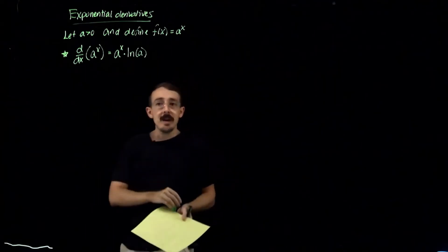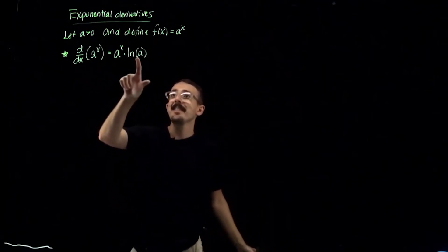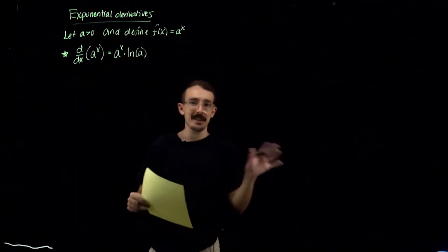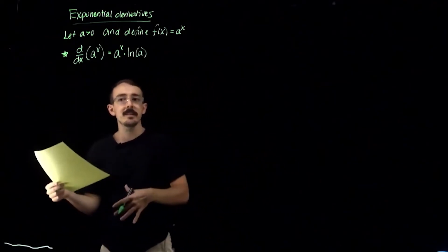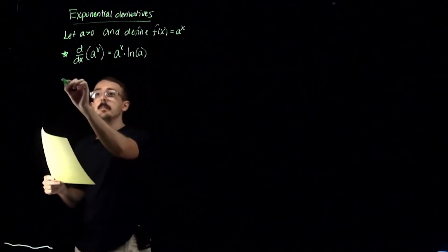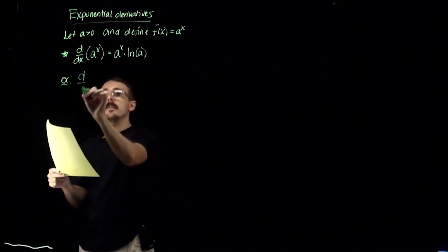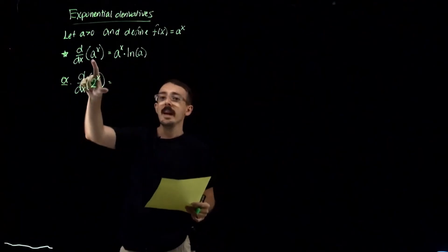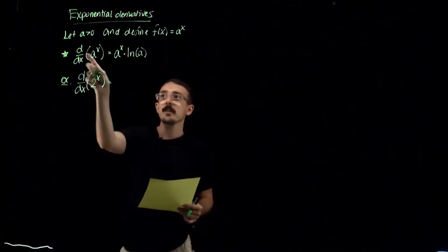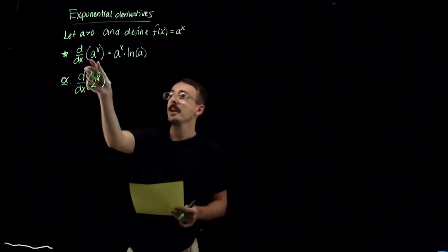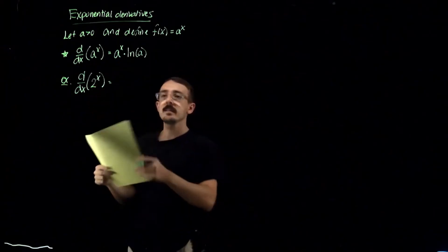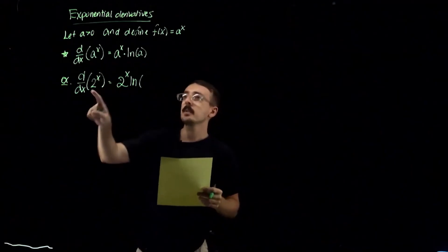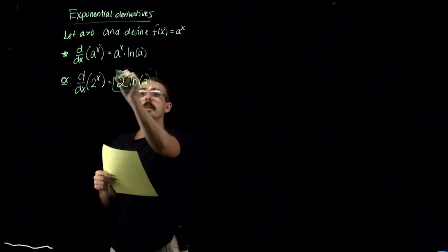Here's our next rule: the derivative of a^x is equal to a^x times ln(a). It's easy to remember because you copy what it is and then take ln of the base. For our first example, the derivative of 2^x: our a is 2, so we repeat 2^x and multiply by ln(2). That's our derivative.